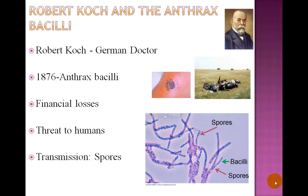Koch examined the blood of animals infected with anthrax and noticed that anthrax has two stages: the bacillus stage, which is rod-shaped as shown here with the green arrow, and the spore stage, shown here with red arrows. The spore stage was shown to be a resting stage. Koch injected the spores into healthy mice and the spores produced anthrax in the mice, meaning the spores were responsible for the transmission of the disease.